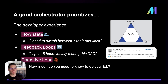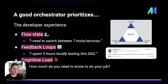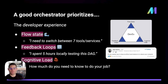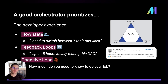A good orchestrator prioritizes developer experience, which I define as having three components: flow state, feedback loops, and cognitive load. Flow state is that feeling of almost effortless development — if you're constantly switching between tools, you don't have a good flow. Feedback loops are the ability to iterate quickly, fail fast, and get tangible feedback immediately. Cognitive load is about whether you end your day feeling like you had to manage everything in your brain or whether it felt effortless.